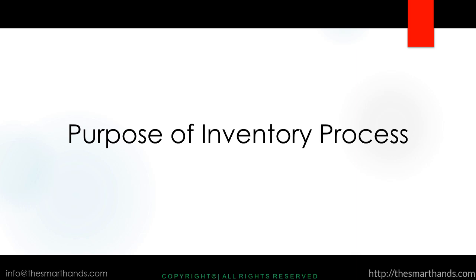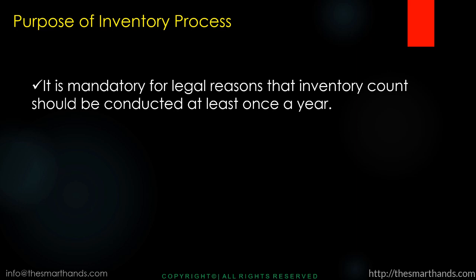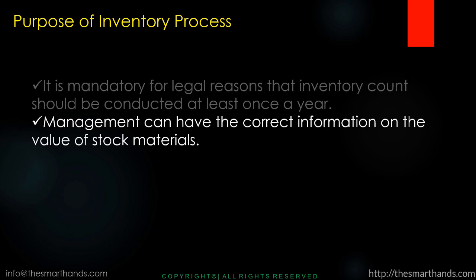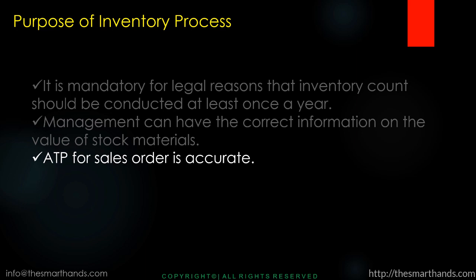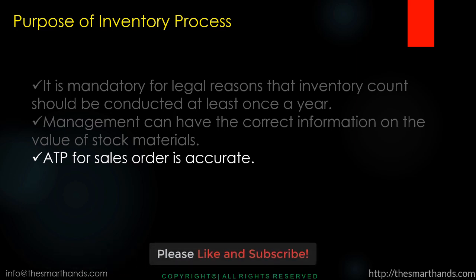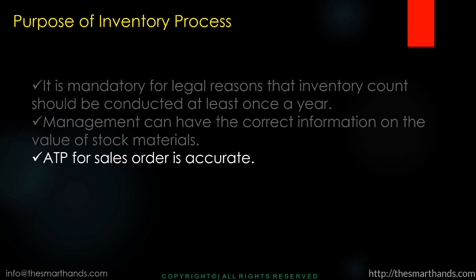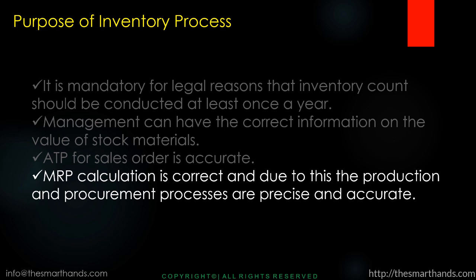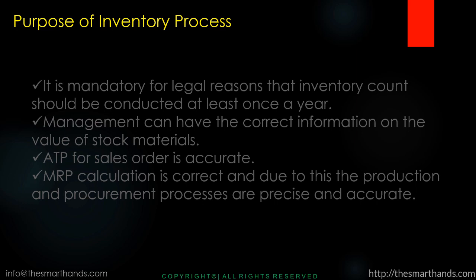Now we'll discuss the purpose of the inventory process. It is mandatory for legal reasons that an inventory count should be conducted at least once a year. Management can have correct information on the value of stock materials. ATP for sales orders is accurate — ATP stands for Available to Promise, which is checked when creating a sales order to confirm a delivery date based on available stock and procurement processes. Also, MRP calculation is correct, making production and procurement processes precise and accurate.